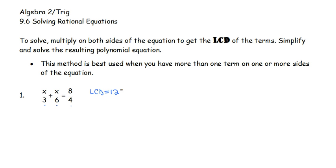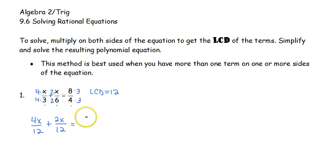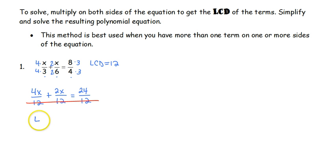If the LCD is 12, we've got to make all of our pieces have denominator 12. The first piece is missing a factor of 4, so we multiply top and bottom by 4. The second is missing a factor of 2, and the third is missing a factor of 3. That becomes 4x over 12 plus 2x over 12 equals 24 over 12. Once we have a common denominator, we cross it out and take the numerator as our new equation.